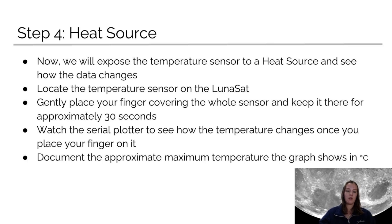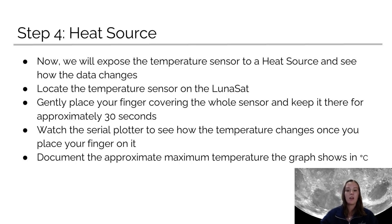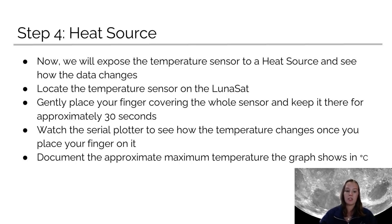You can use different heat sources — the easiest one is putting your finger onto the temperature sensor, which is on the back. You can also use cold sources, like cold packs, as long as there is no condensation on it that could possibly damage the Lunaset. Just keep experimenting and see what interesting trends you can observe.